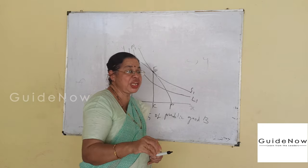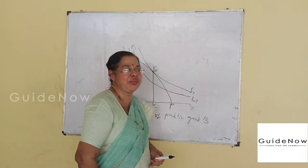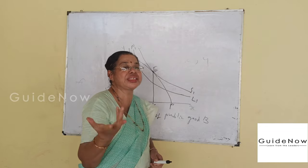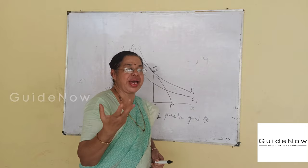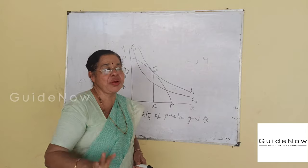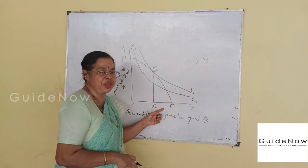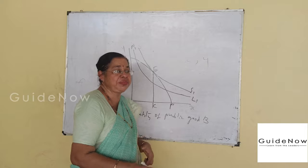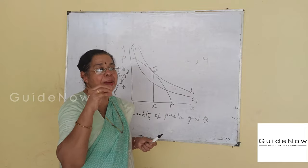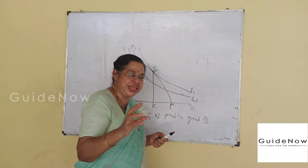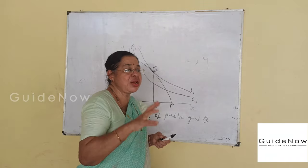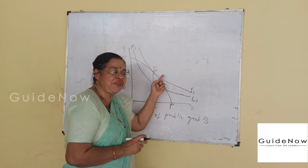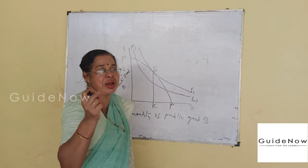PP1 shows the production possibility curve, representing how productive resources can be allocated to produce maximum quantities of both private and public goods. The Pareto-optimality condition and social welfare function are both interpreted using this figure to show how maximum social welfare can be achieved.